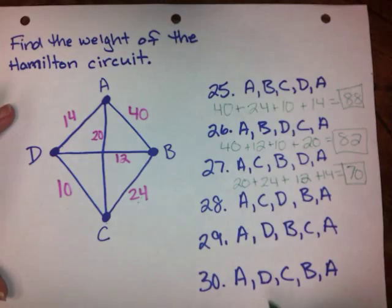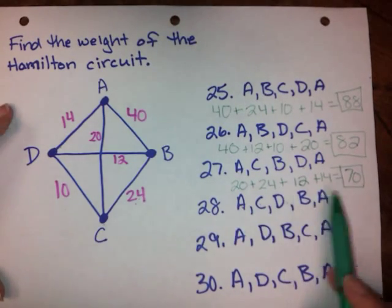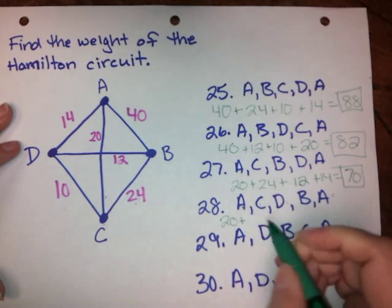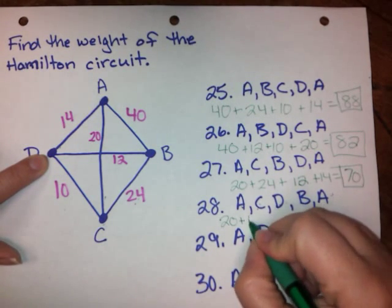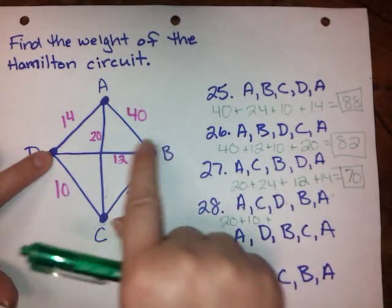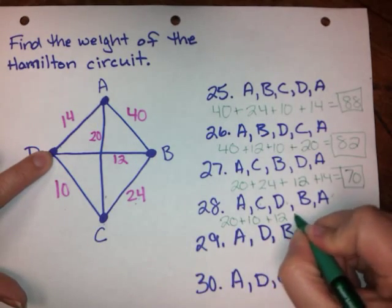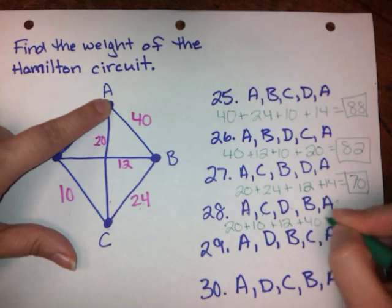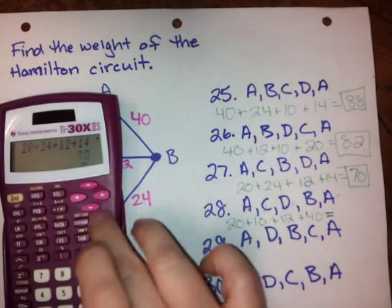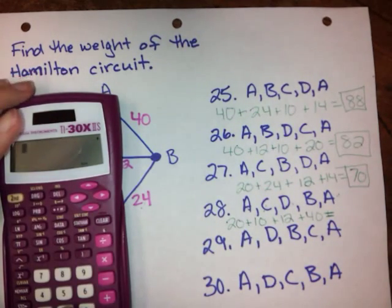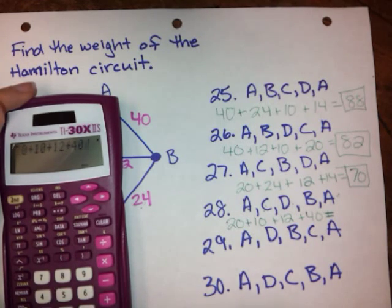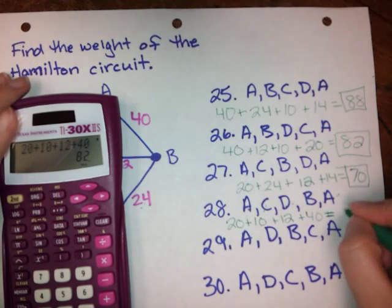Okay, next one. We have A, C, D, B, A. A to C, that was 20. Plus C to D, that was 10. D to B is 12. B to A is 40. I don't need another plus sign, I need an equal sign. So plug it into our calculator. 20 plus 10 plus 12 plus 40 equals 82.